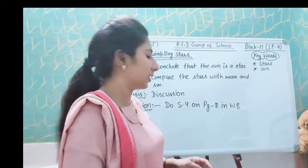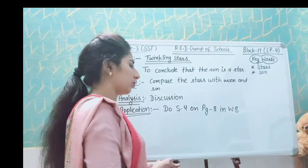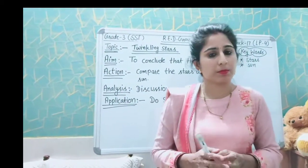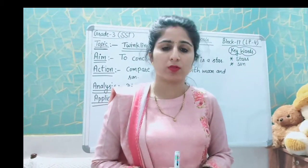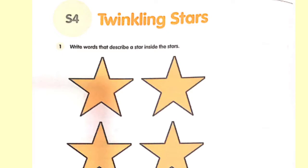Now it's time to apply your knowledge. Open page number 8 of your workbook — twinkling stars. Write words that describe a star inside the stars drawn on the page. Question number two: why is the sun called a star? Write the reasons. Question number three: why does the sun look bigger than the other stars? Write your answer.